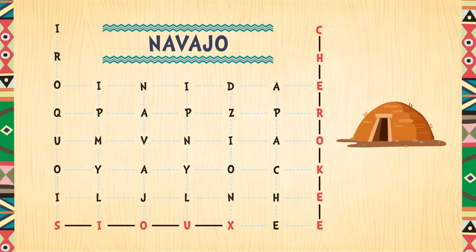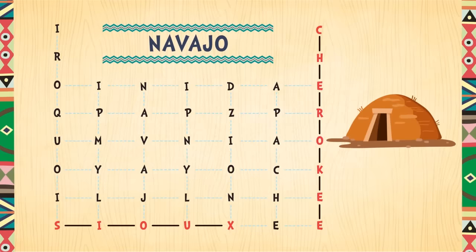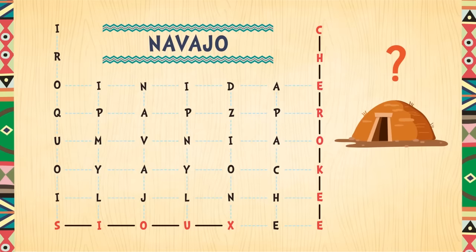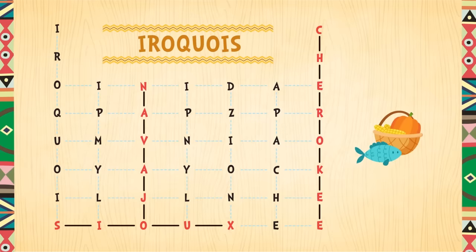The Navajo tribe originally lived in the southwest region of the United States. It begins with the letter N. Let's find the tribal name in the word search — N A V A J O. Correct!